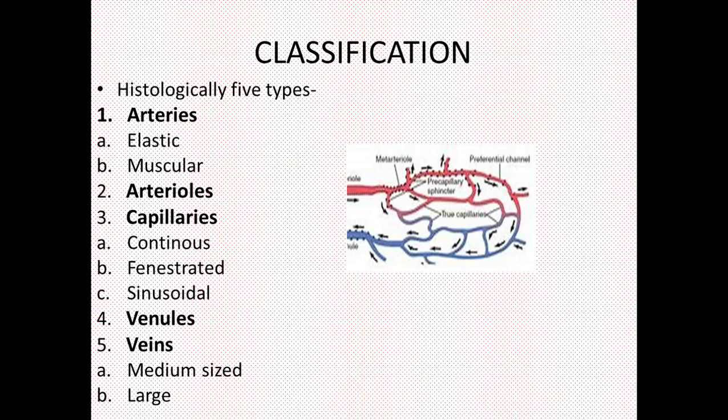Historically, blood vessels are classified into five types: arteries, arterioles, capillaries, venules, and veins. Arteries are further classified into elastic and muscular arteries. Capillaries are classified into continuous, fenestrated, and sinusoidal types, and veins are classified into medium-sized and large veins.